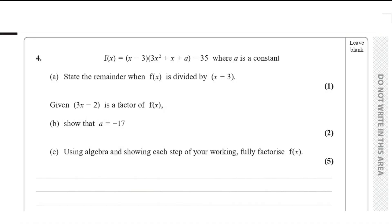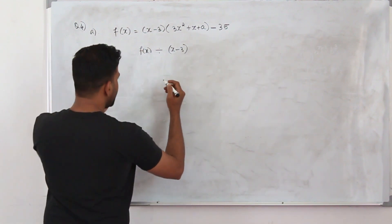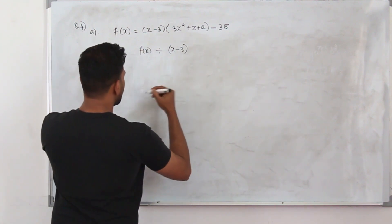Question number four: f(x) equals (x minus 3) times (3x² + x + a) minus 35, where a is a constant. Part a: state the remainder when f(x) is divided by (x minus 3). This question has one mark.